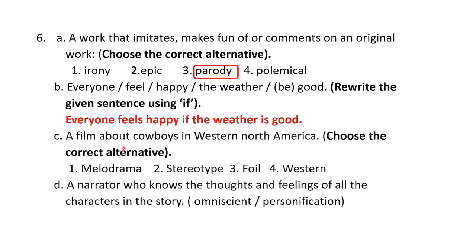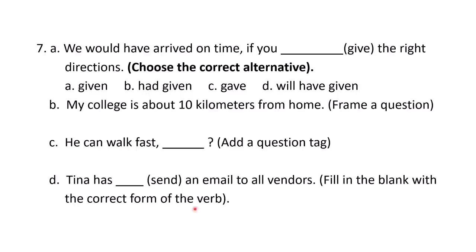C: 'A film about cowboys in Western North America' — choose the correct alternative from melodrama, stereotype, foil, and Western. Western is the correct answer — that is the film about cowboys. D: 'A narrator who knows the thoughts and feelings of all the characters in the story' — what is he called? Omniscient or personification? The answer is omniscient.